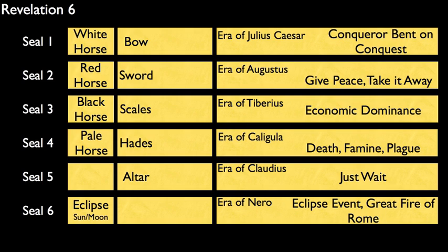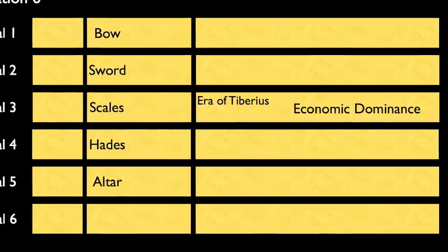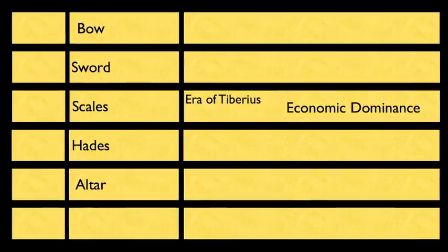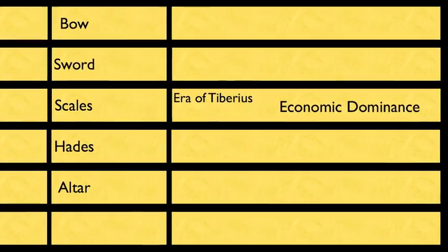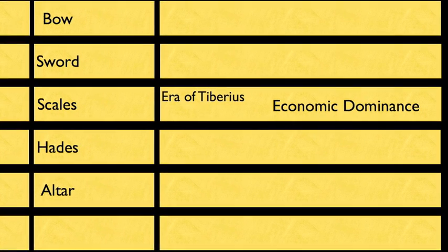This is the full breakdown of Revelation 6. As you may recall, the four horses were planets, the objects were constellations, and the rest of the allegories were devoted to king eras. For a very long time, I thought these were unimportant. However, if you focus on the era of Tiberius, a very interesting pattern emerges.